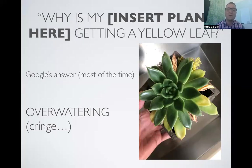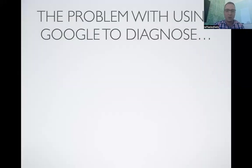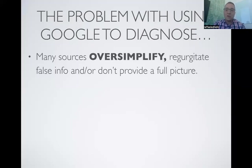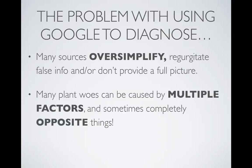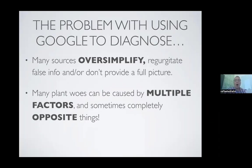I feel so strongly about this word and the behavior it drives that I've included a section on overwatering in my book Houseplant Warrior. The problem with using Google to diagnose plant issues is that a lot of sources overly simplify everything, or they regurgitate false information and keep propagating that material until it leads to misconceptions. It just doesn't provide a full picture of your actual problem, and many plant problems can be caused by multiple factors — often completely opposite things.